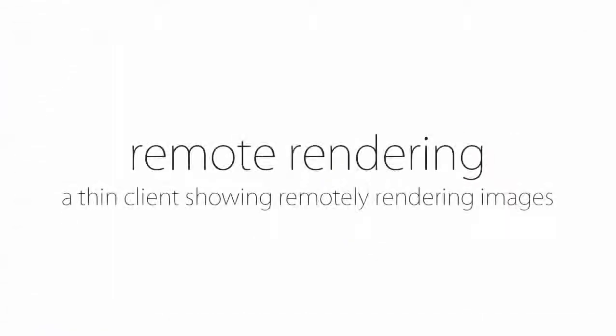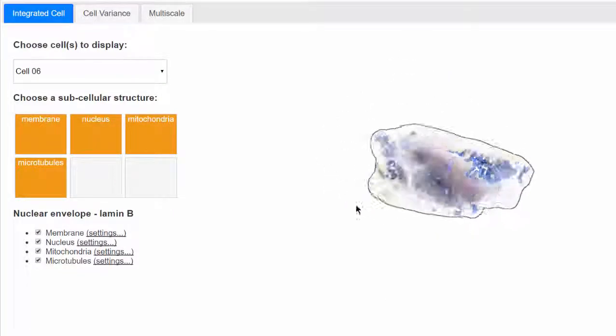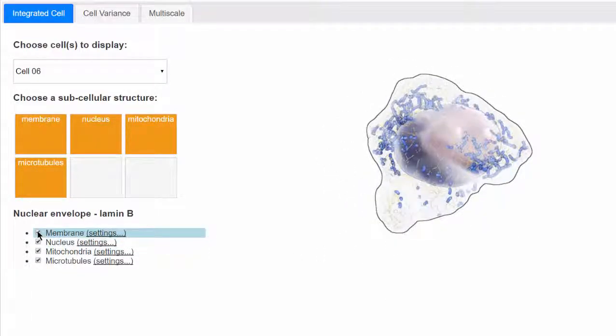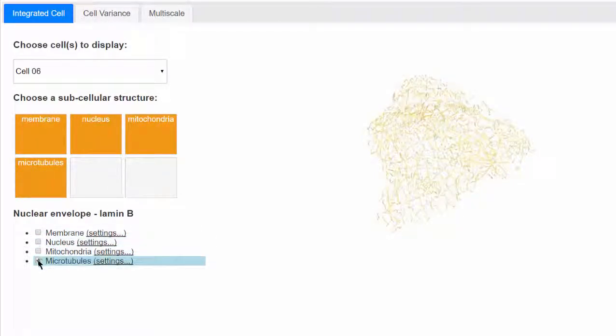The second application we implemented within our Marion system is a remote rendering server. It listens for connections from clients, which we implemented in JavaScript. The client allows the user to rotate the cell, zoom in and out, and turn on and off individual organelle systems.